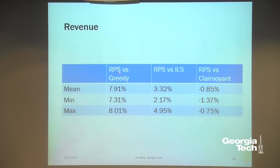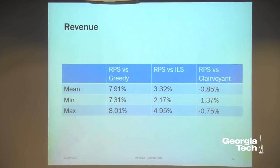Comparing our Random Price Shock algorithm to others: compared to greedy, our algorithm increased revenue by about 8%. Compared to iterated least squares — a state-of-the-art algorithm — our algorithm increased revenue by about 3%. And compared to the best possible clairvoyant model, we are within about 1%.